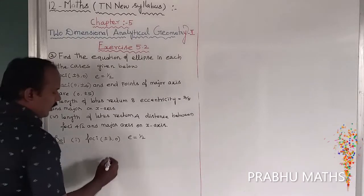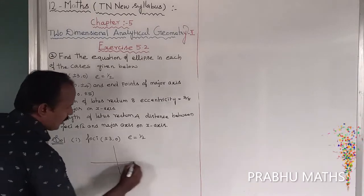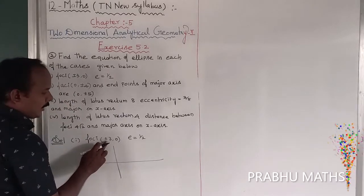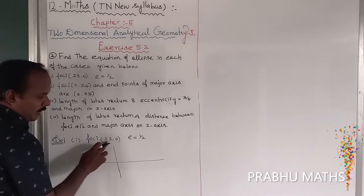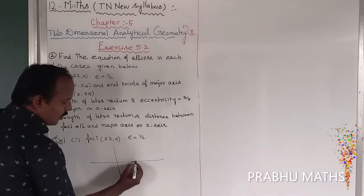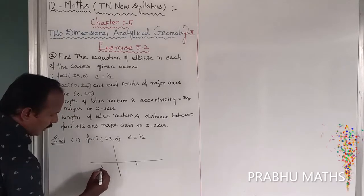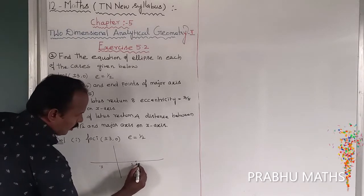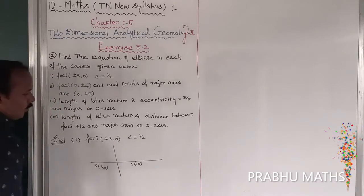First of all, draw the diagram. This is the y-axis, next the x-axis. This one is the focus. Focus is plus or minus (3, 0), so on the x-axis: this one is 3, this one is minus 3. So S is (3, 0) and S' is (-3, 0).